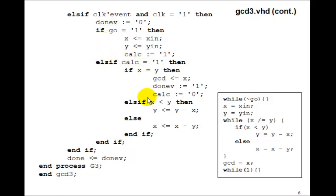CALC is 1, so we go to here. X is not equal to Y at this point, so we just execute our GCD algorithm. That is, if X is less than Y, then Y gets Y minus X. Else, X gets X minus Y.